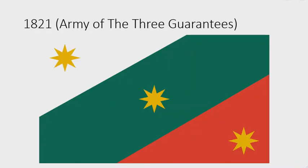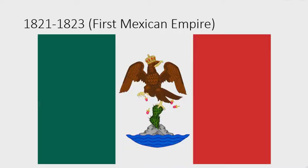1821: here we have the first flag of Mexico — the Army of the Three Guarantees. There are three shapes: one white, one green, and one red, and on each shape there is a yellow eight-pointed star. 1821 to 1823: here we have the flag of the First Mexican Empire. There are three rectangles — one green, one white, and one red — and on the white rectangle there is a crowned eagle carrying a cactus on a rock with water.